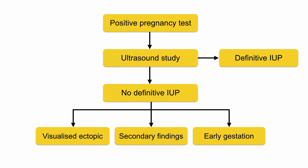So to summarize, let's review an algorithm on how to assess the early pregnant female who presents with abdominal pain and/or vaginal bleeding in order to rule out an ectopic pregnancy. If you have a patient with a positive pregnancy test, you should perform a bedside ultrasound study. Either you will see a definitive IUP, in which case you've ruled out your ectopic and you're done, or you will not see a definitive IUP. If you don't see a definitive IUP, you should be considering one of the following options: either you've visualized your ectopic pregnancy and will consult your OB/GYN consultant for further definitive management.